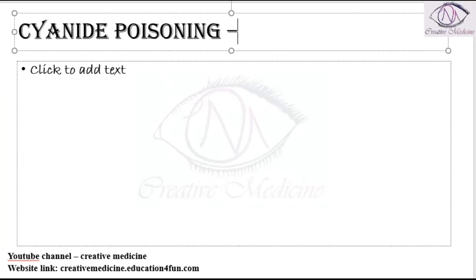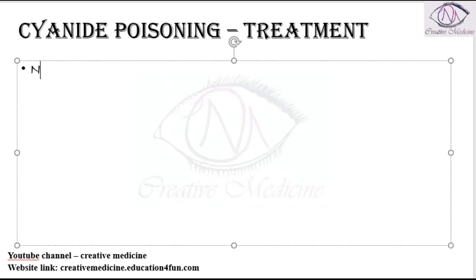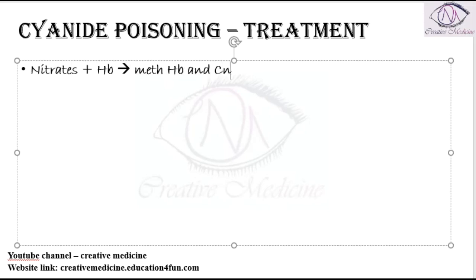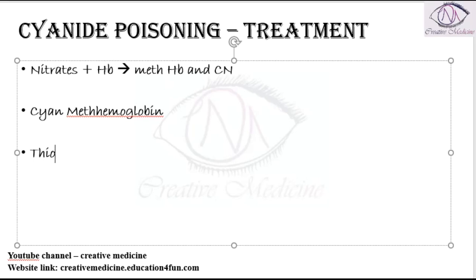In cyanide poisoning, nitrates and hemoglobin are combined together to form methemoglobin and cyanide. This methemoglobin with cyanide is called cyan methemoglobin. When this cyan methemoglobin combines with thiosulphates, it forms thiocyanates, which are excreted in the urine.